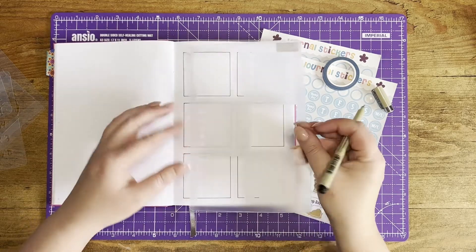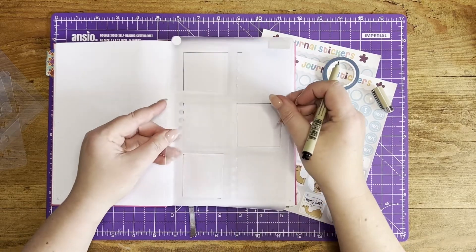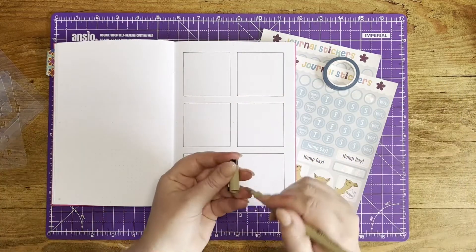Now you could use these little dots are on here to mark your to-do list on the boxes but I'm actually going to use stickers so we'll flip to that now.